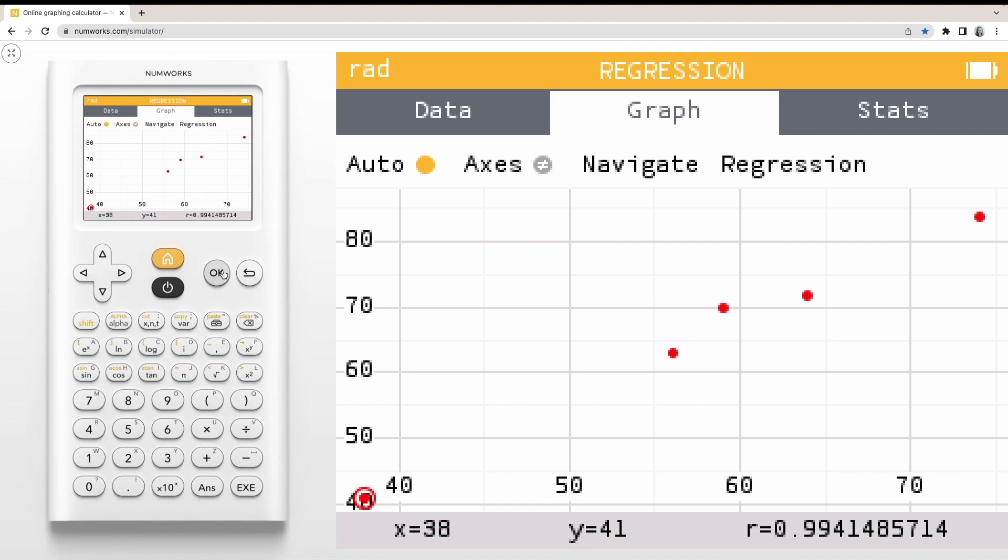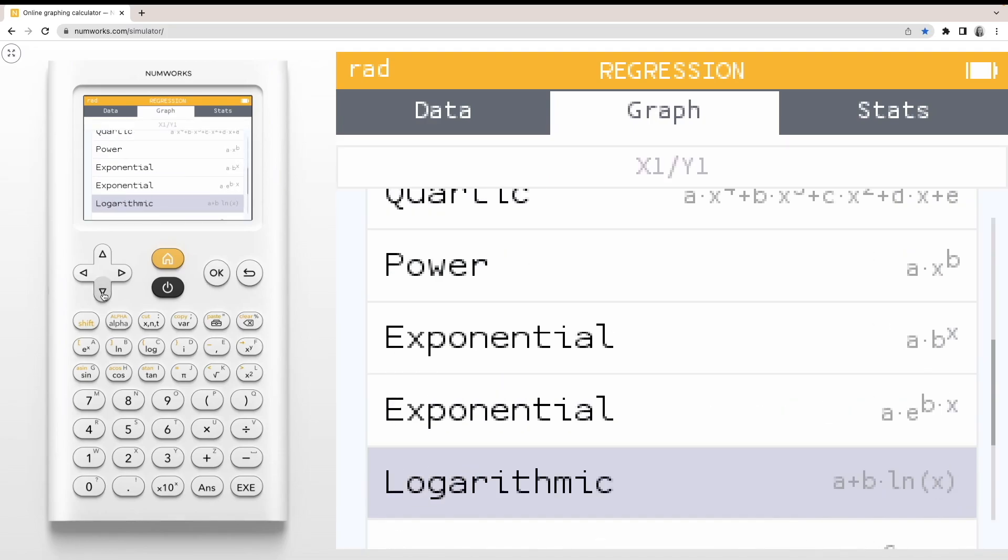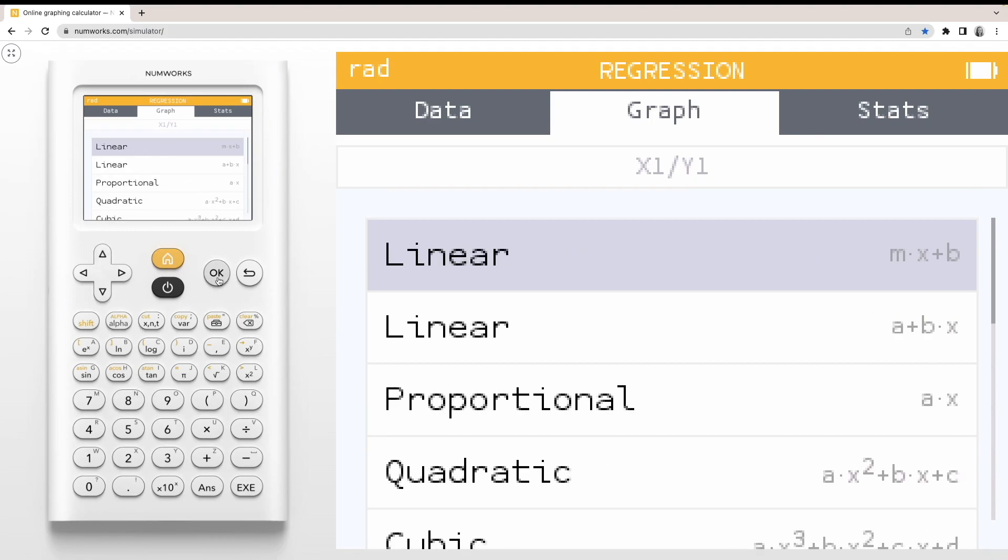To include a regression model, simply press OK or your Toolbox key to access your regression model options. You can choose from many different models. Press OK to select a model.